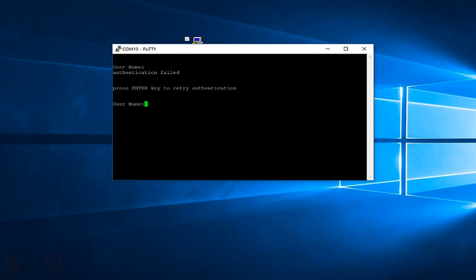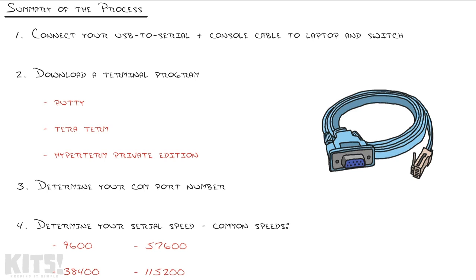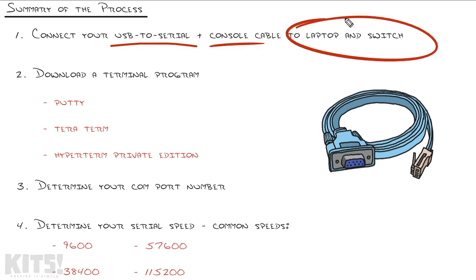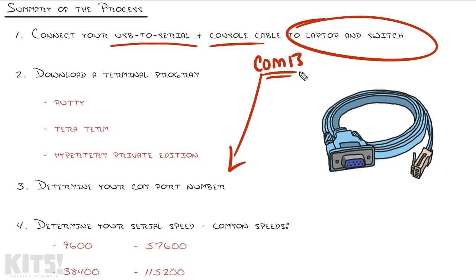The good news is that we're in, even though the Cisco quick start guide was totally off. Let me summarize that process. First, we got the USB to serial adapter and the console cable and connected it to our laptop and switch — the whole physical chain. Windows automatically installed the driver for the USB to serial adapter and called it COM13. If your Windows operating system doesn't have the driver, you'll need to download and install it, but the end result is the same: you end up with a new COM port on your Windows operating system.